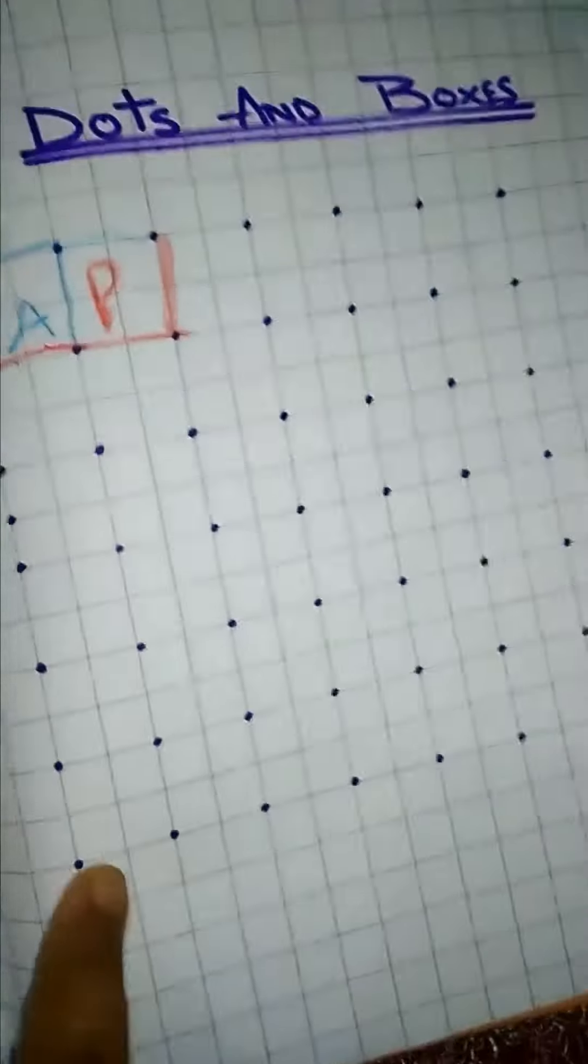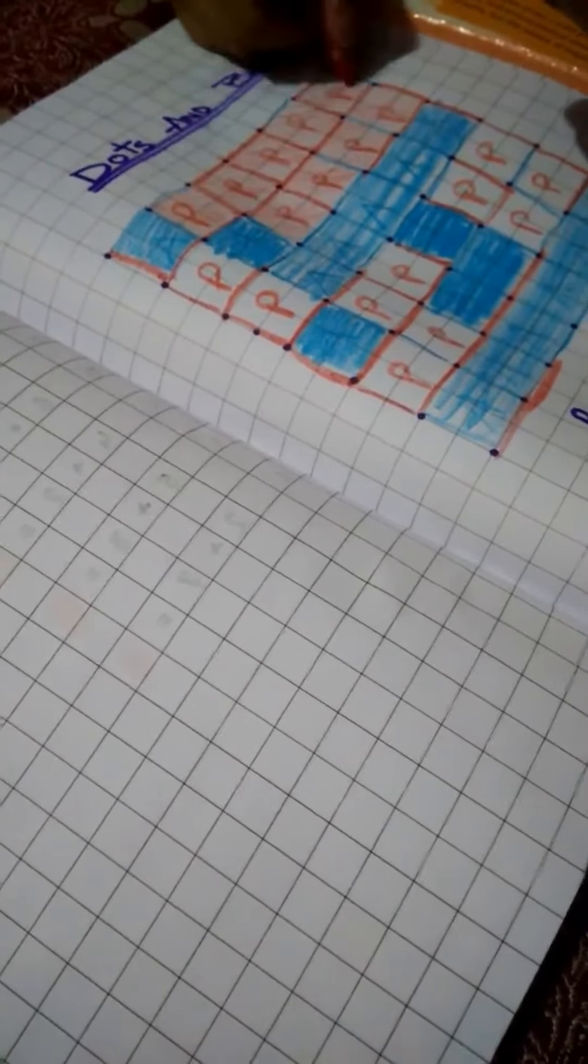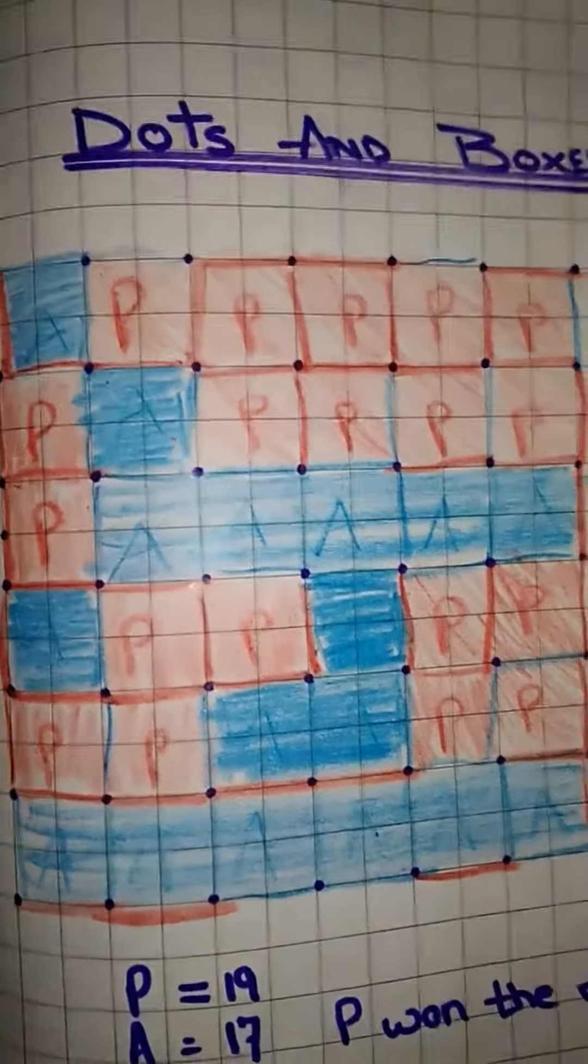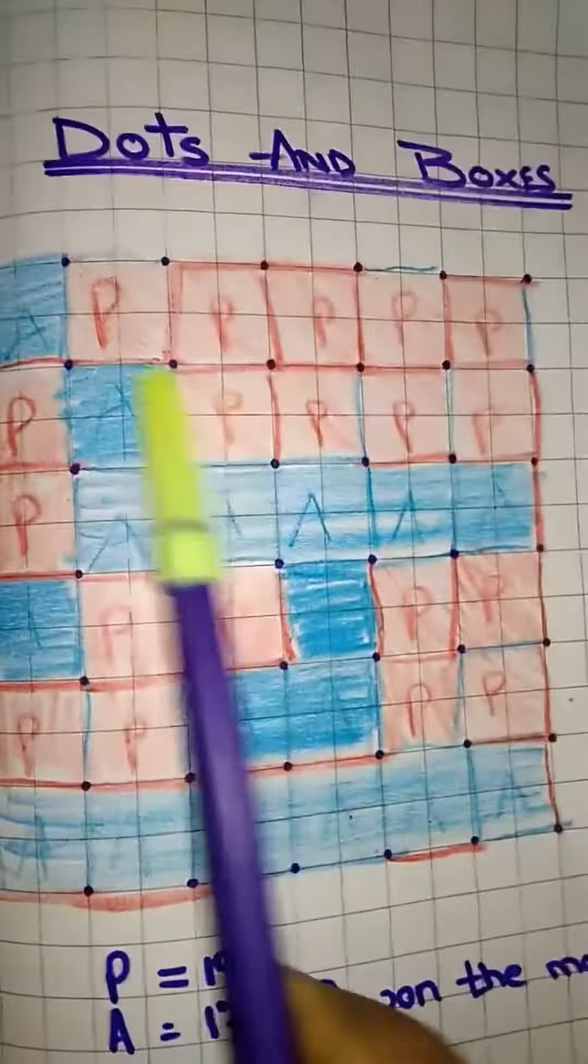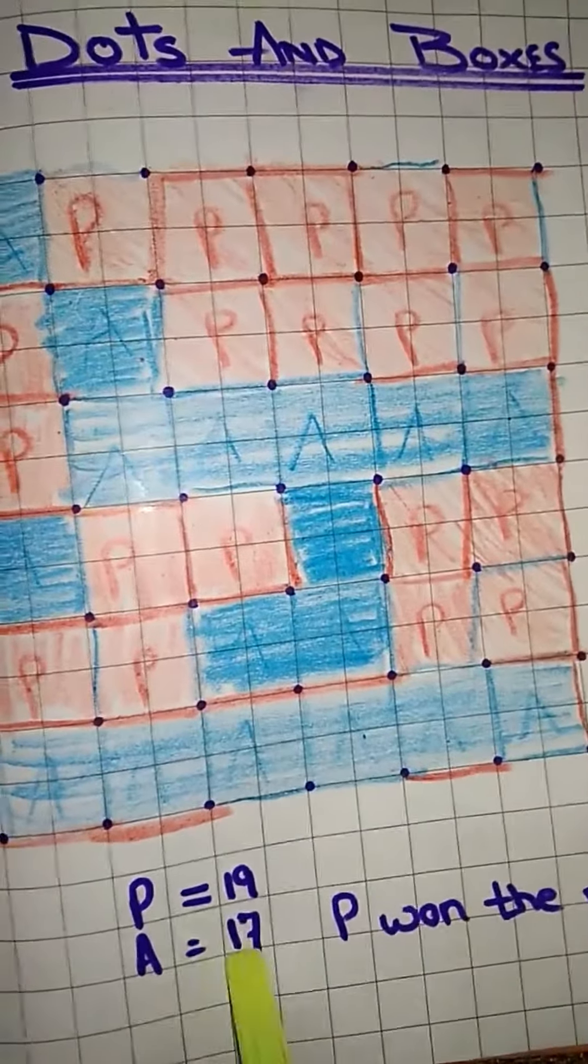Okay? So, you will play this game completely. See? Here, this P is, this is me. And I have won the game. See? P won the match.